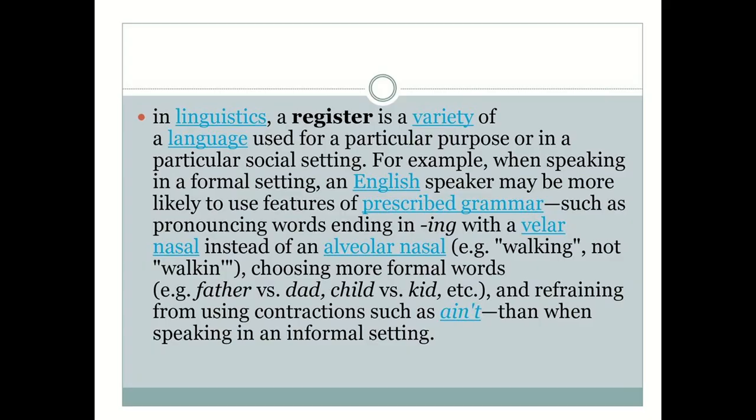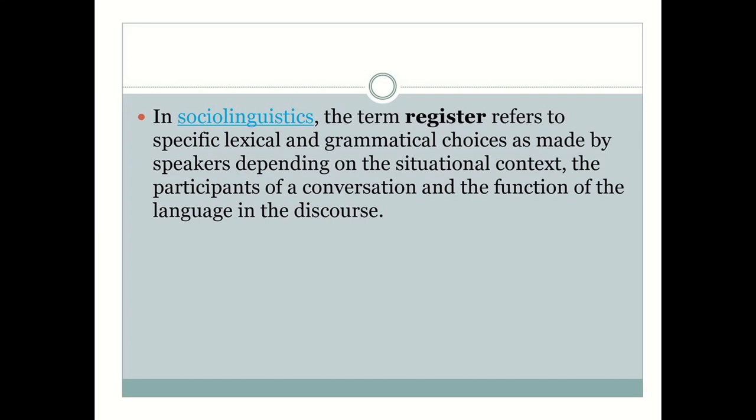In linguistics, a register is a variety of language used for a particular purpose or in a particular social setting — the stylistic or functional variety of any language. For example, when speaking in a formal setting, an English speaker may use features of prescribed grammar, such as pronouncing words ending in '-ing' with a velar nasal — 'walking' not 'walkin'' — and choose more formal words like 'father' compared to 'dad,' and 'child' versus 'kids,' refraining from contractions. In sociolinguistics, the term 'register' refers to specific lexical and grammatical choices made by speakers depending on situational context, the participants, and the function of language in discourse.